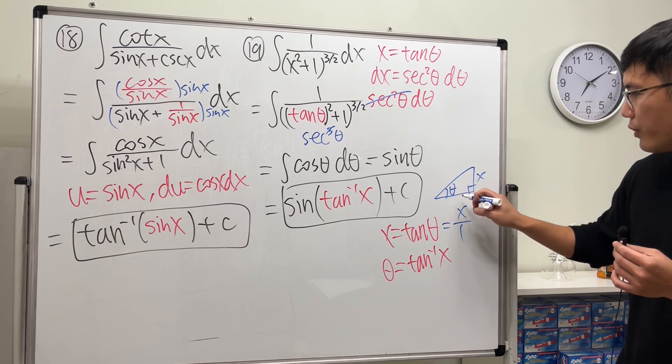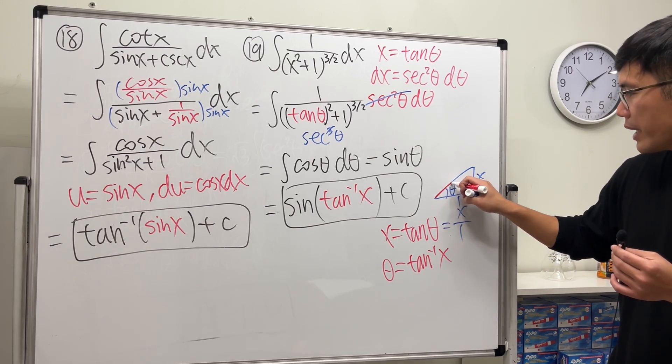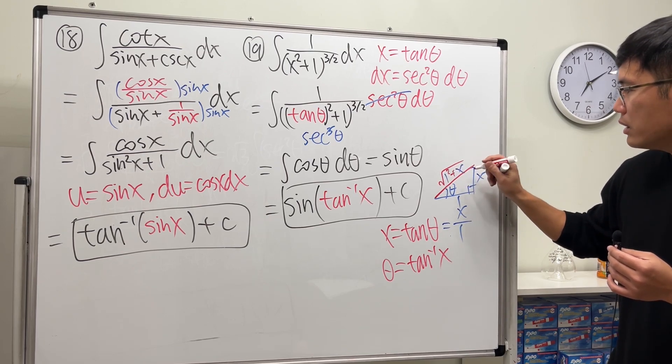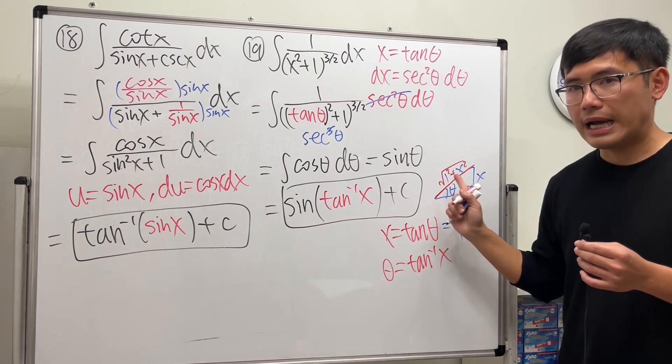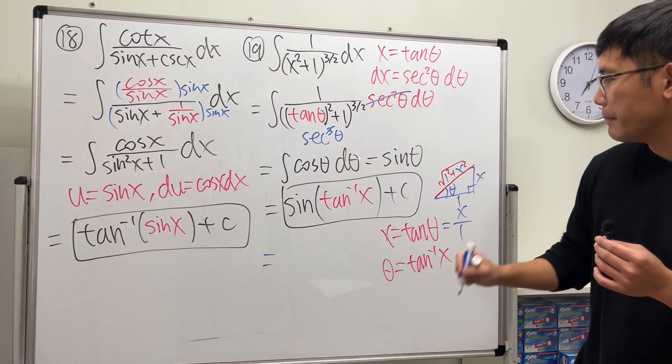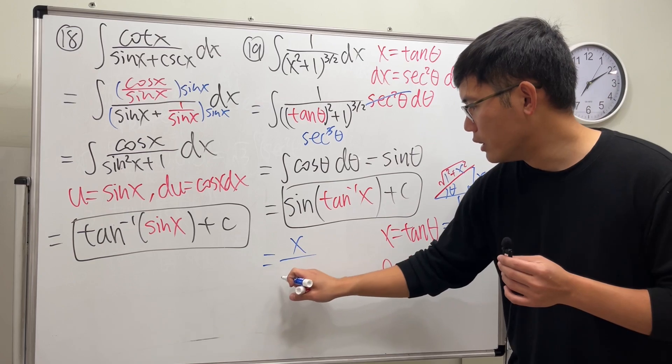x over 1, and the hypotenuse is right here, which is square root of 1 squared plus x squared. And we do the sine for that. So this right here, it's equal to opposite over hypotenuse: x over square root of 1 plus x squared.